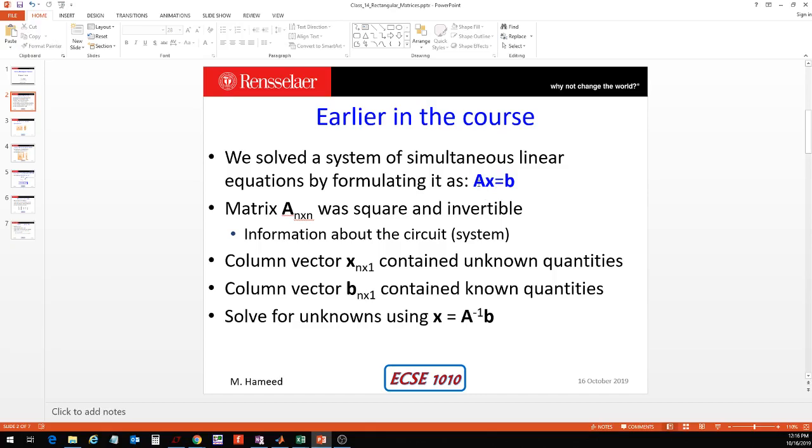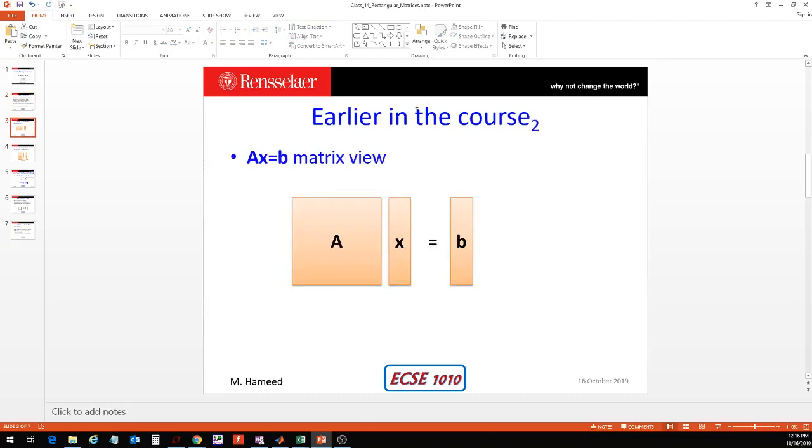In all of this, everything was good because we were able to invert the matrix A as long as it was square and the determinant of A was not equal to 0. A was a square matrix, number of rows equals number of columns, X was a column vector, and B was a column vector as well. But that's not always the case.